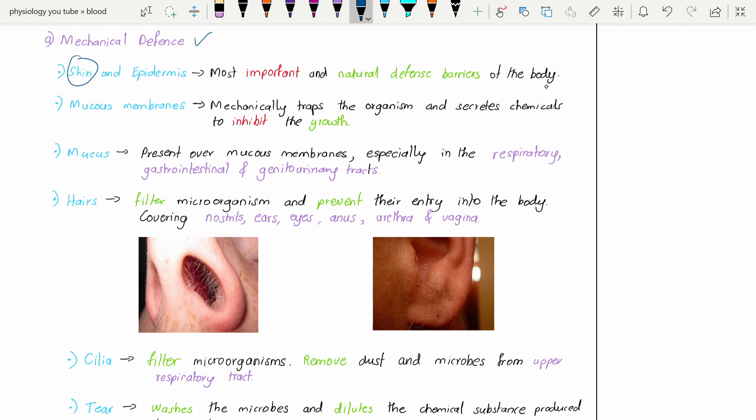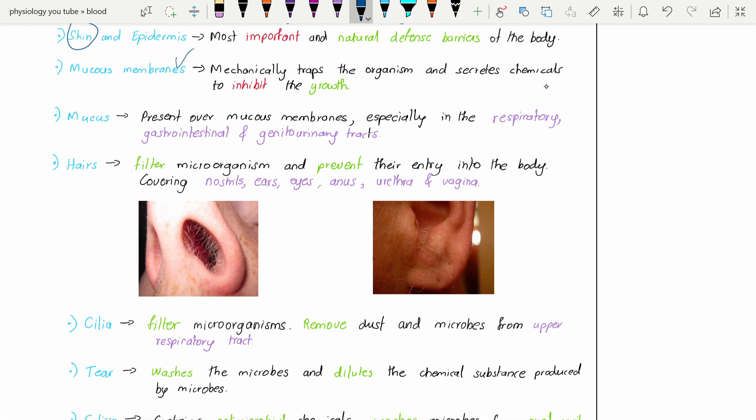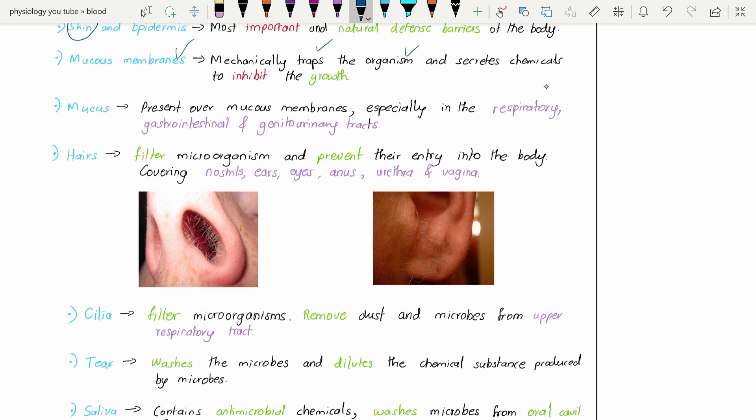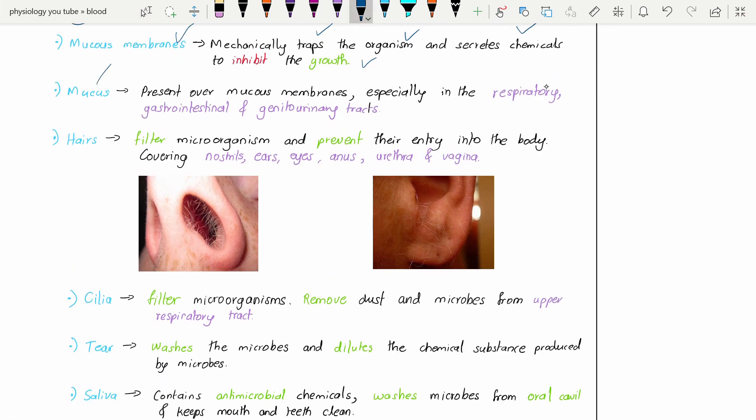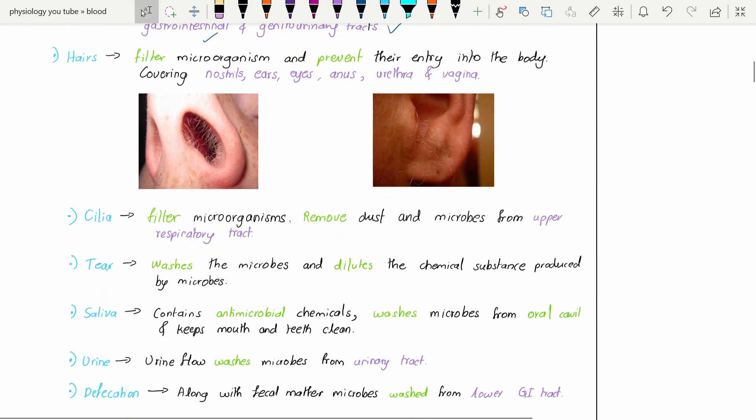Mucous membranes - these are mechanical traps for organisms and they secrete some chemicals that inhibit the growth of microorganisms. Mucus is present over the mucous membrane and they are lining the tracts which are exposed to the external environment, for example respiratory, gastrointestinal, or genitourinary tracts.